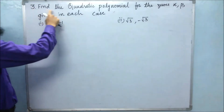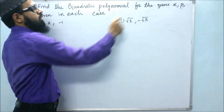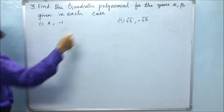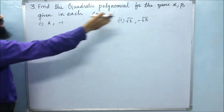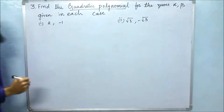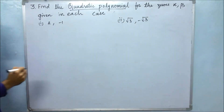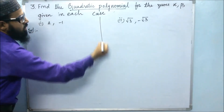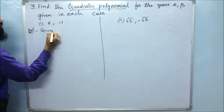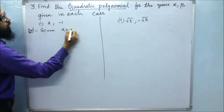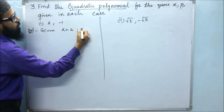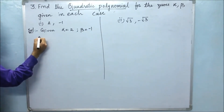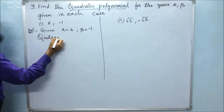In the third problem, they said to find the quadratic polynomial of the zeros alpha and beta given in each case. These are the two bits — they have given the zeros and we have to find a quadratic polynomial. First of all, in the solution we will write what is given. Given: alpha is 2 and beta is minus 1.